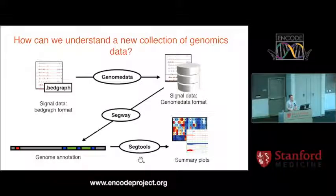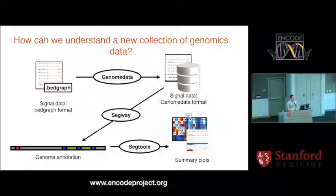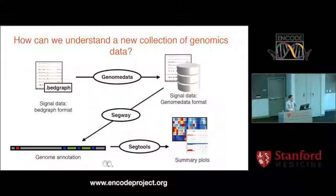First, Genome Data, used for storing and compressing genomics datasets. Second, Segway, a tool similar to ChromHMM for annotating the genome based on genomics data. Third, SegTools, a suite of tools for making plots and analyzing any type of genome annotation. All three tools are independent from one another — you can use Genome Data without Segway, and you can use SegTools to analyze any type of genome annotation, not just Segway or ChromHMM annotations.